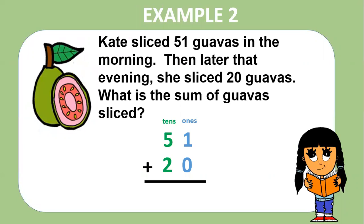Example two. Kate sliced 51 guavas in the morning. Then later that evening she sliced 20 guavas. What is the sum of guavas sliced? Don't forget the steps. Step one, add the ones. Step two, add the tens.